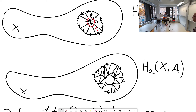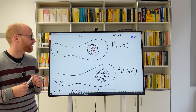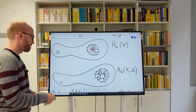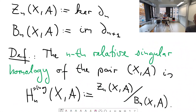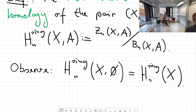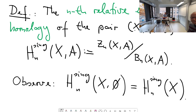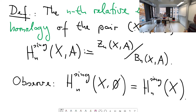One last remark: it turns out that homology is actually a functor, and that was the whole point — to construct new functors. The chain complex itself is easily seen to be a functor: mapping a space to its set of singular simplices is a functor, and then we apply the free abelian group construction, which is also a functor. So the chain complex construction is functorial, and the only remaining thing is to see that taking homology of a chain complex is likewise a functor.